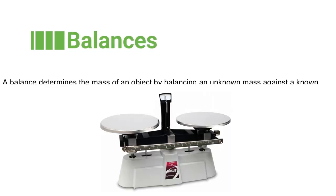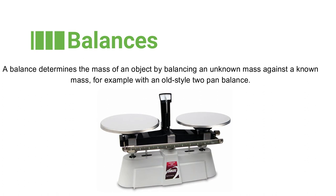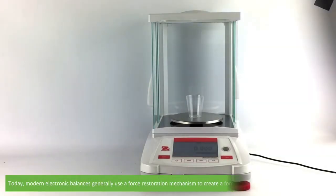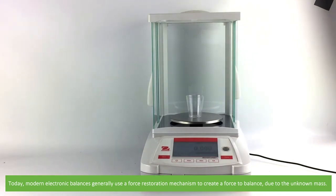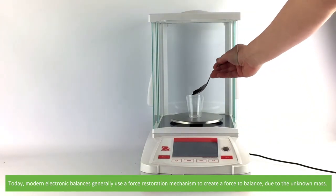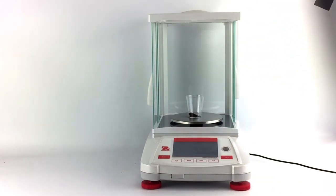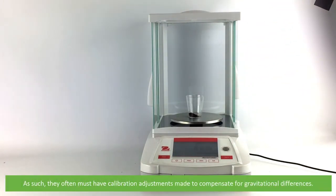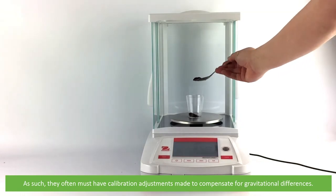A balance determines the mass of an object by balancing an unknown mass against a known mass, for example with an older style two-pan balance. Today, modern electronic balances generally use a force restoration mechanism to create a force to balance due to the unknown mass. As such, they often must have calibration adjustments made to compensate for gravitational differences.